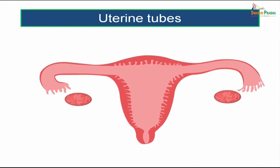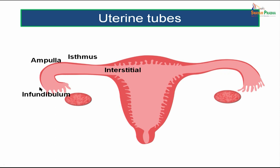Let us move on to the uterine tubes. There are two uterine tubes attached on either side of the uterus. The parts of the uterine tube are: the interstitial part, which is attached to the body of the uterus; the isthmus; the ampulla; and the infundibulum, the extrememost point, which has finger-like projections pointing towards the ovary to grab the ovum released during ovulation.